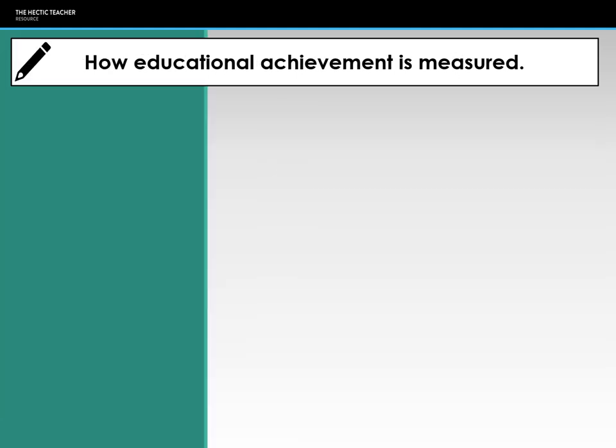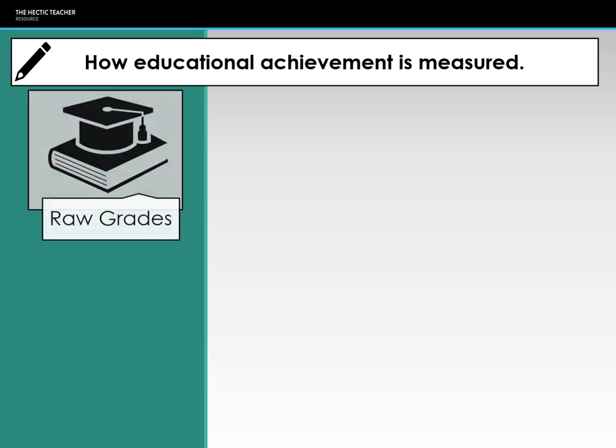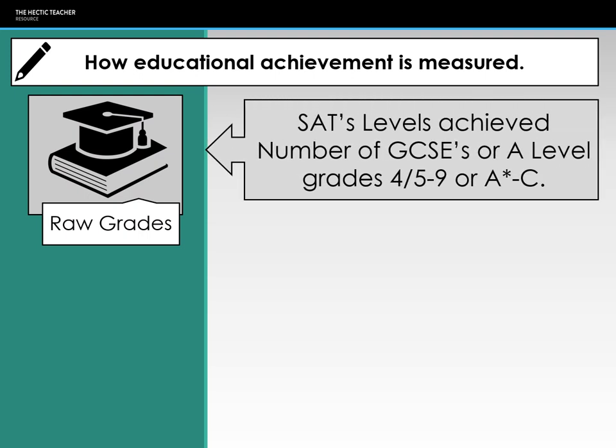There are many ways to measure educational achievement. The most common is raw grades — the percentage achieving certain levels. At Key Stage 2, it's the percentage of students achieving a particular level in a subject like English, maths, or science. At GCSE, it tends to be the number achieving grades 4 or 5 to 9.